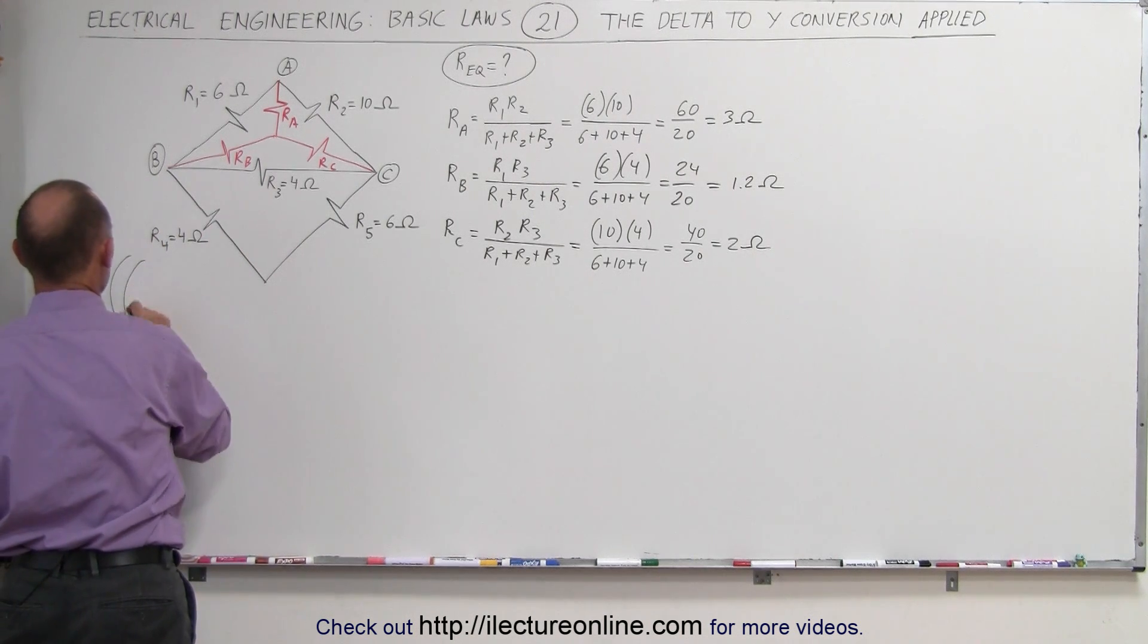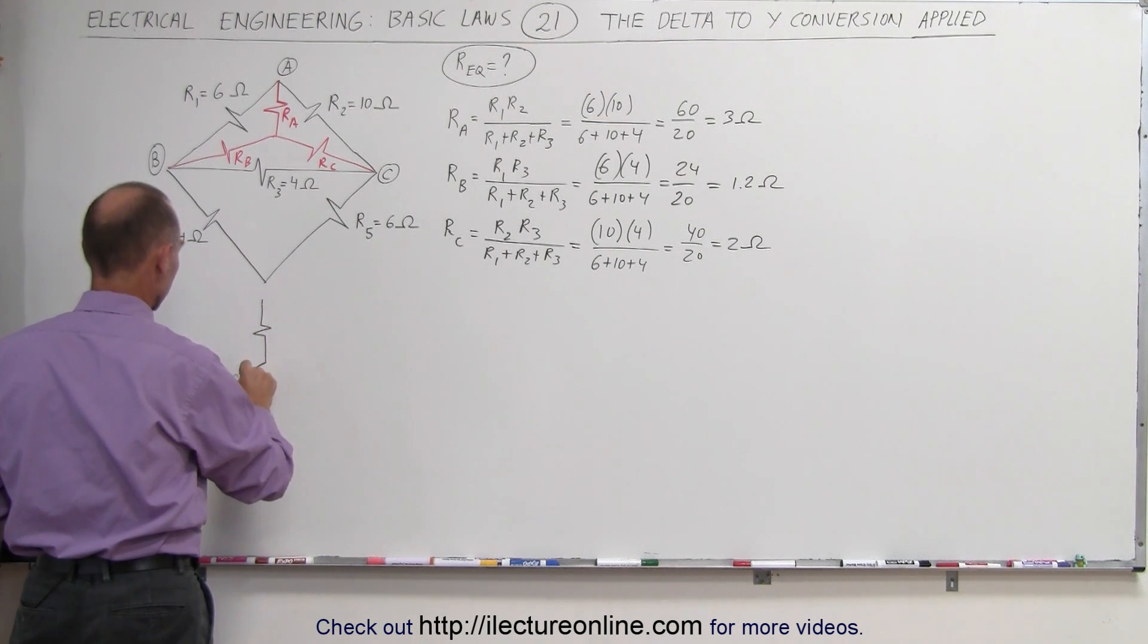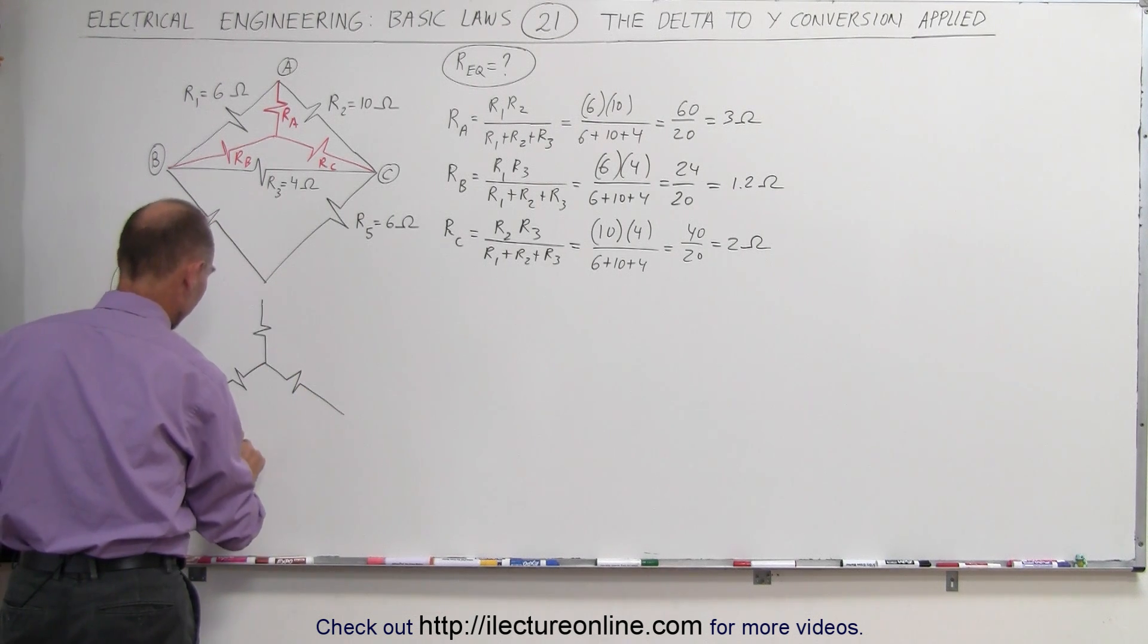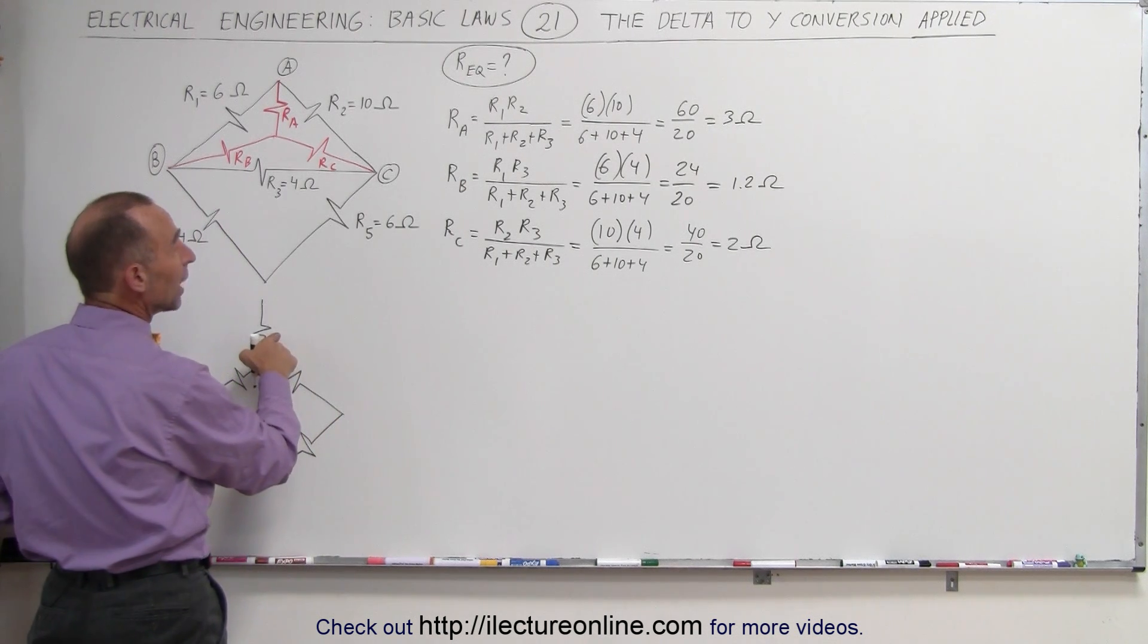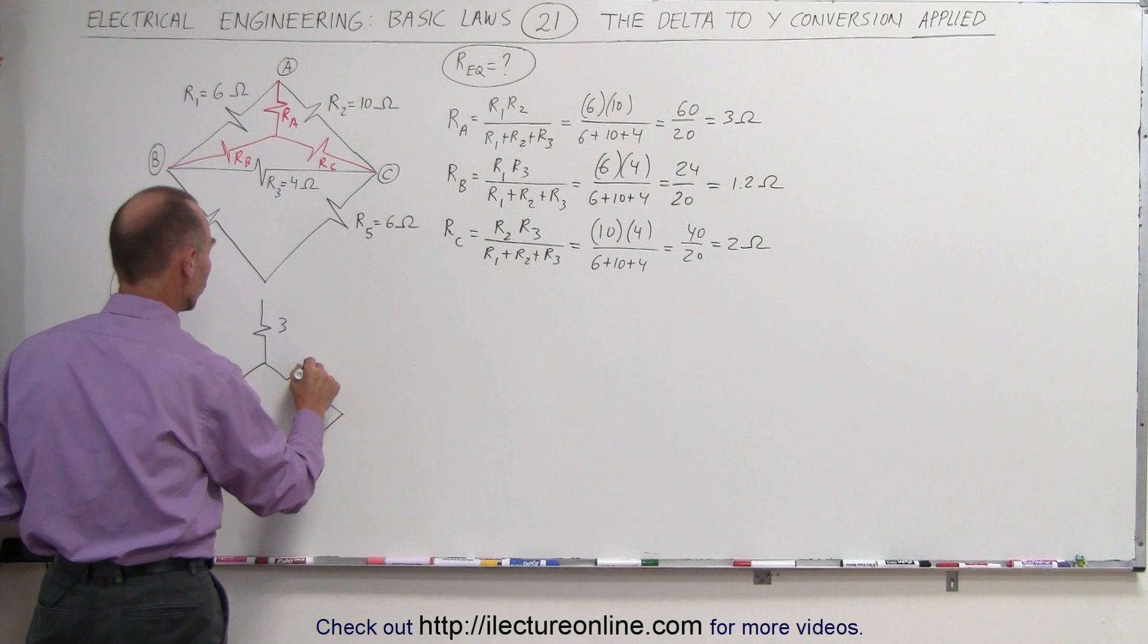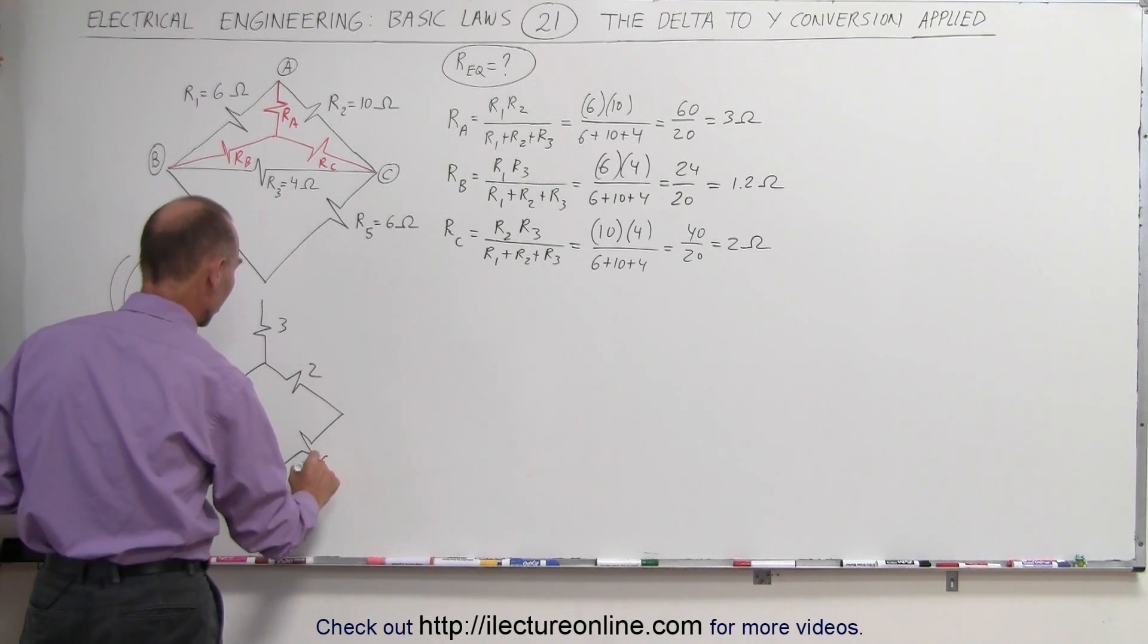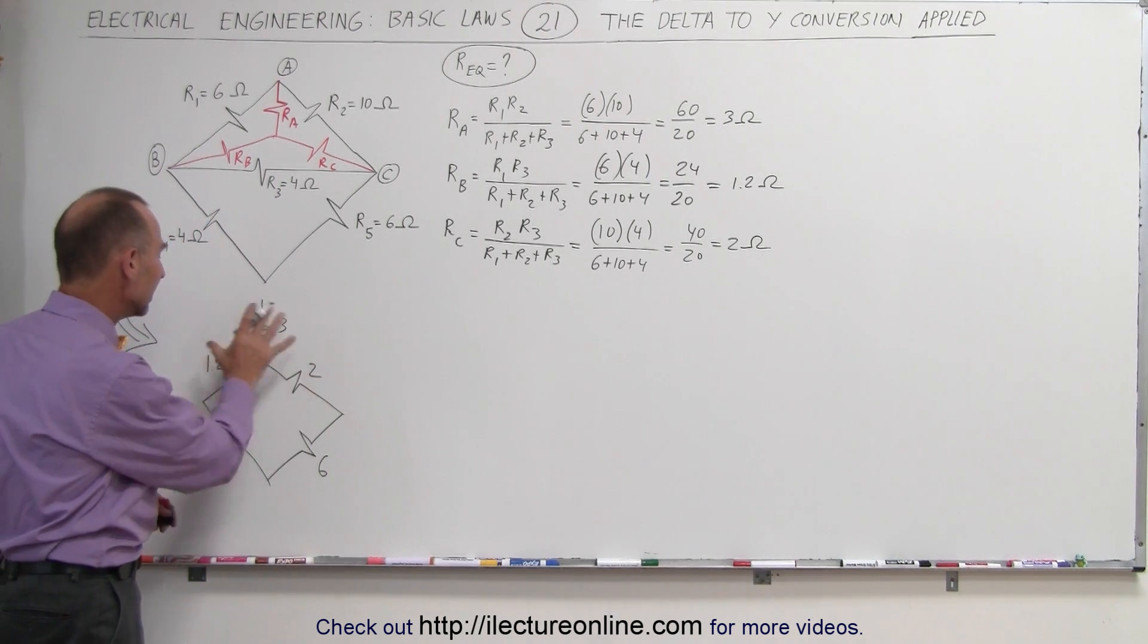This whole circuit can now be redrawn as follows. And then the other two resistors that are still there that have not been changed. This is R sub A, which is 3 ohms. This is R sub B, which is 1.2 ohms. This is R sub C, which is 2 ohms. R4 is still 4 ohms, and R5 is still 6 ohms.